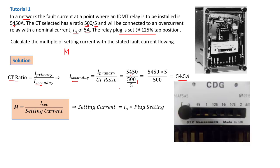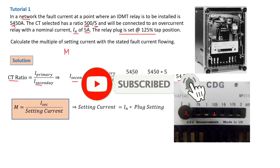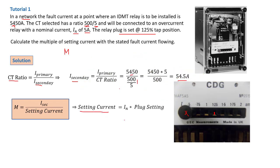Zooming into an IDMT relay here, we can see that this particular one, the plug setting is set at 0.5, that is 50%. But you can pull this thing out and put it at 0.75 or 1. Right now, we have our plug setting set at 1.25, that is 125%. We'll then multiply the 1.25 times the nominal current. And that is then what is called the setting current.